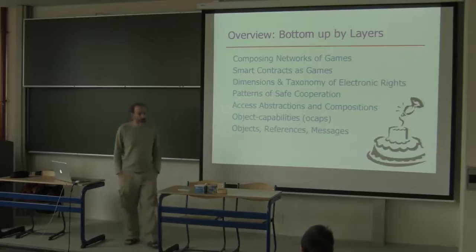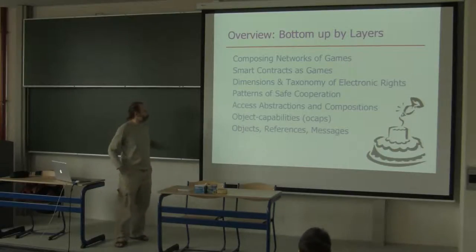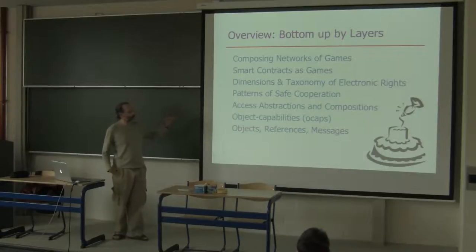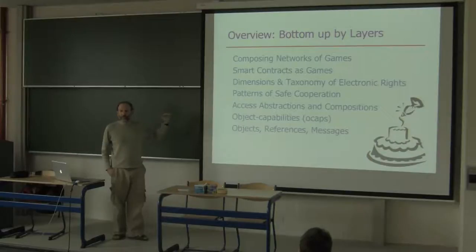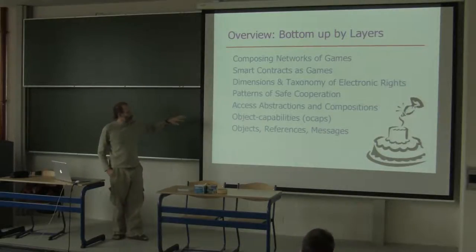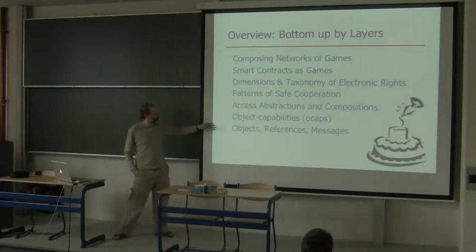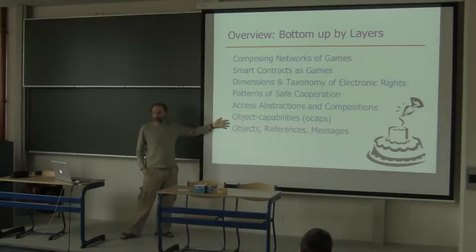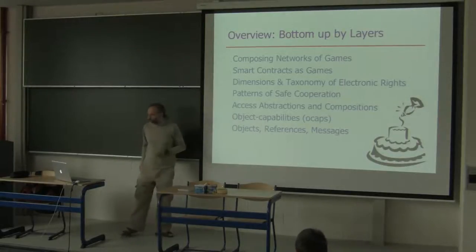This slide is a tour of the rest of the talk, but I want you to read it backward. I'm going to present the talk as a tour through seven levels of abstraction, where each level builds on the previous. We'll take it in bottom-up order. There will be some redundancy with yesterday's talk as I cover the first two layers, but then we'll be getting into new stuff.